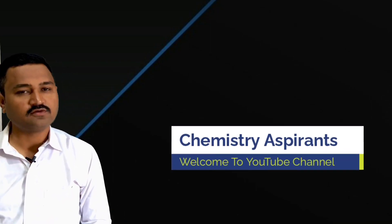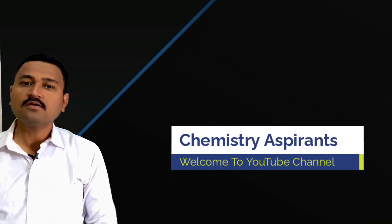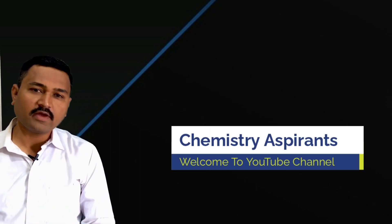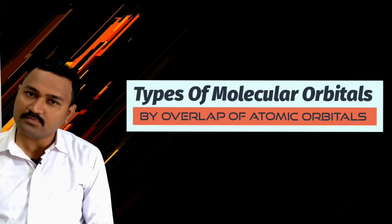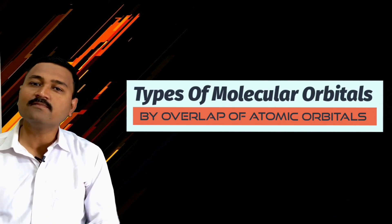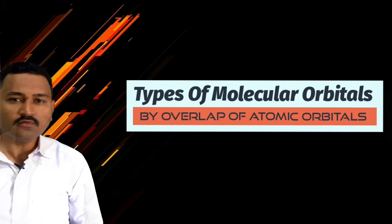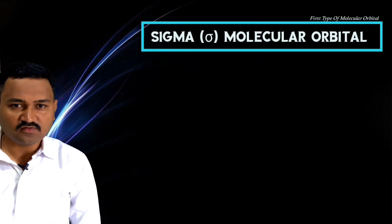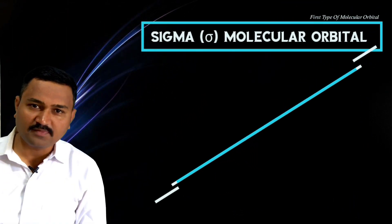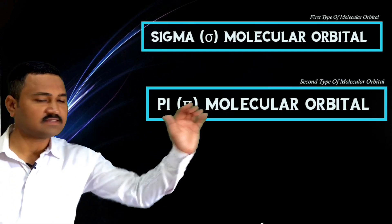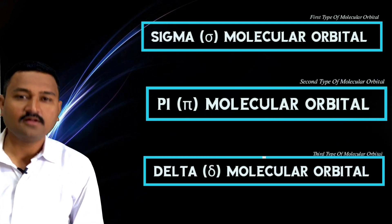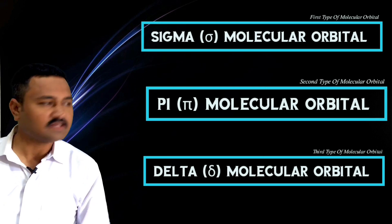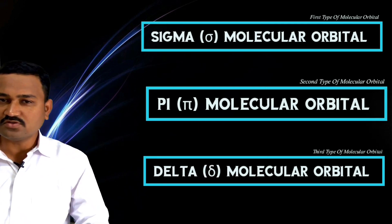Hello dear friends, welcome back to my YouTube channel Chemistry Aspirant. In today's lecture we are going to know about the types of molecular orbital after the overlapping of the atomic orbital during the formation of a molecule. Generally, we observe that the molecular orbitals in molecules are of three types: sigma molecular orbital, pi molecular orbital, and delta molecular orbital.